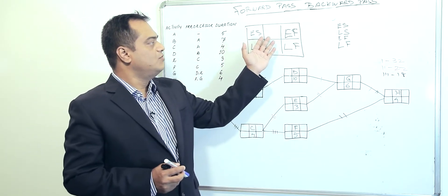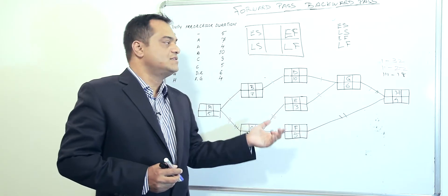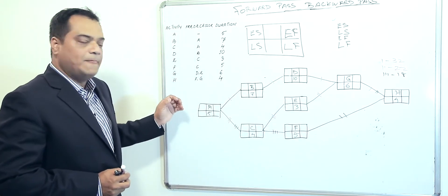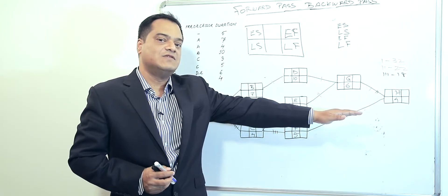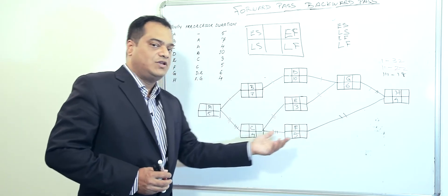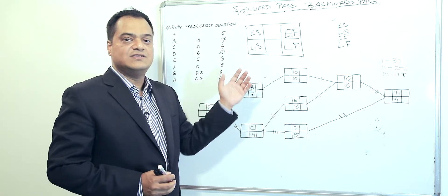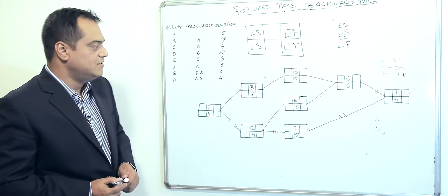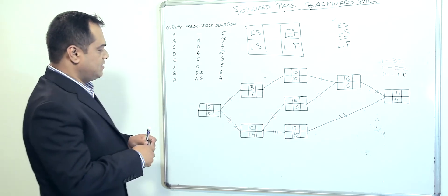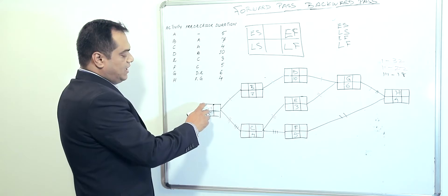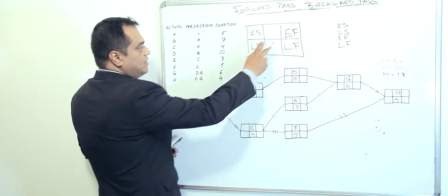Early finish is also defined by the duration of the project. Let's look into this example. We also do the backward pass to come up with the latest finish. The forward pass means going from left to right to the end result of the project. For the forward pass: node A can start on day zero, and with a duration of five, early finish is zero plus five, which equals five.